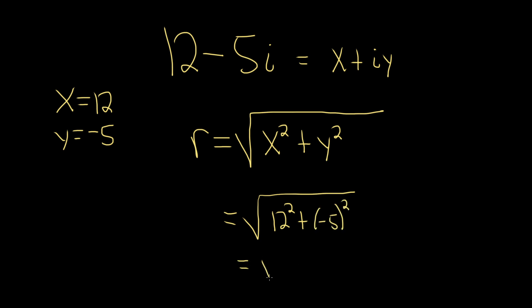12 squared is 144, and negative 5 squared is 25. So we end up with the square root of 169, and that's equal to 13. This would be the modulus of the complex number.